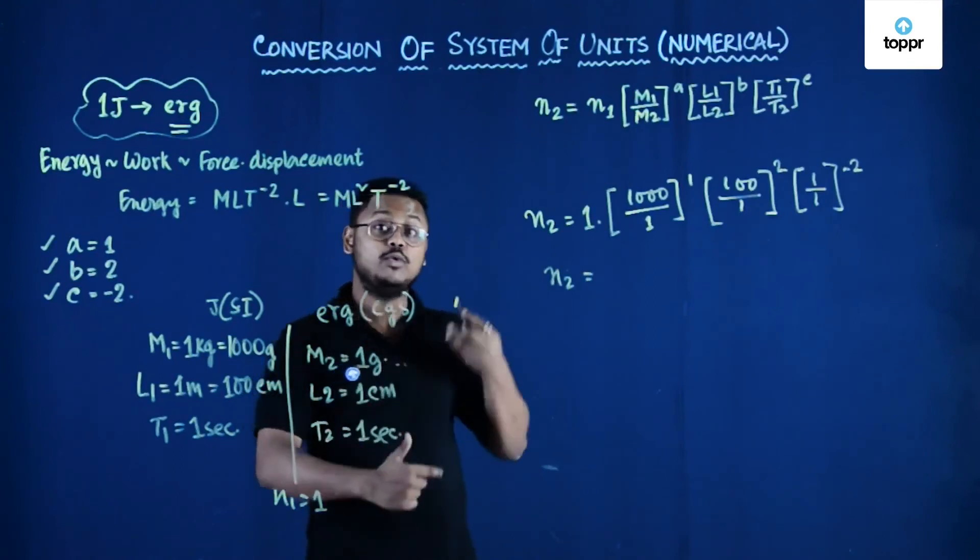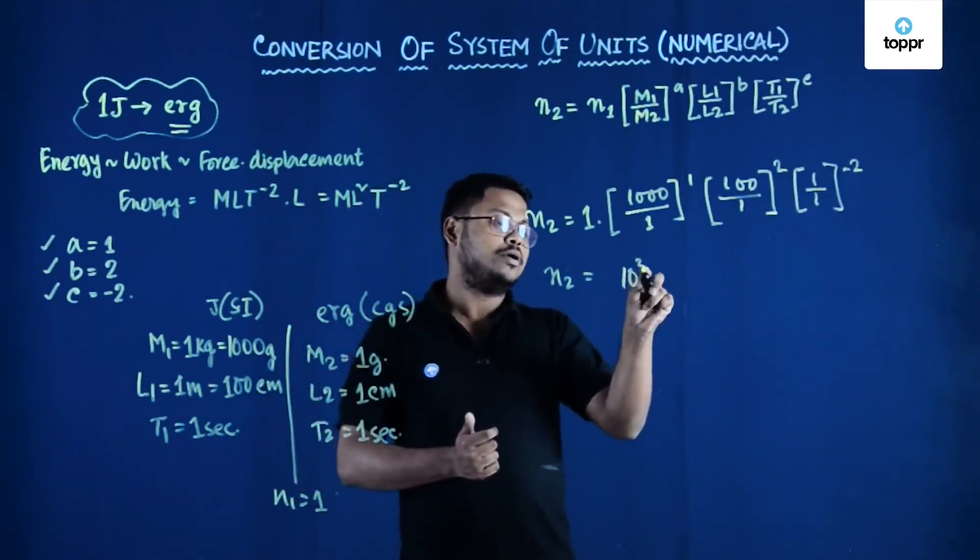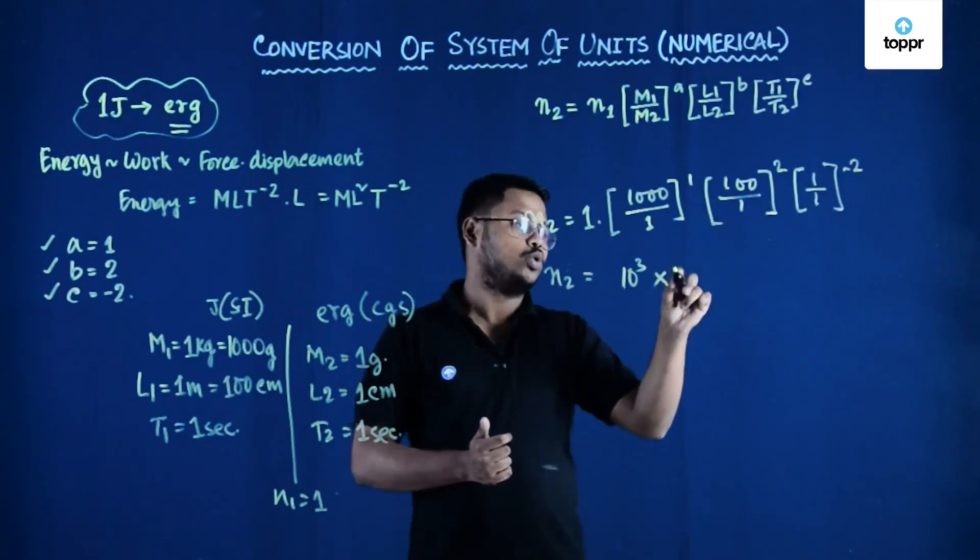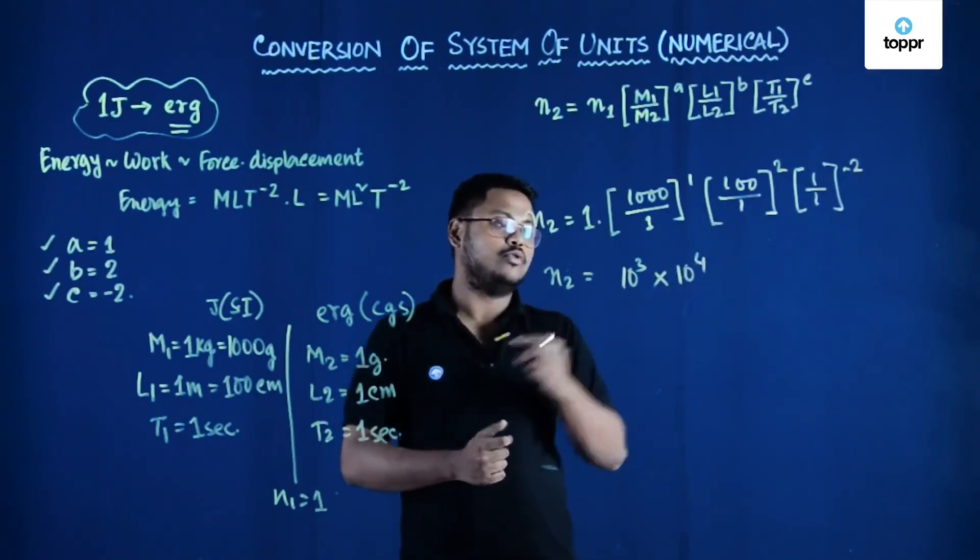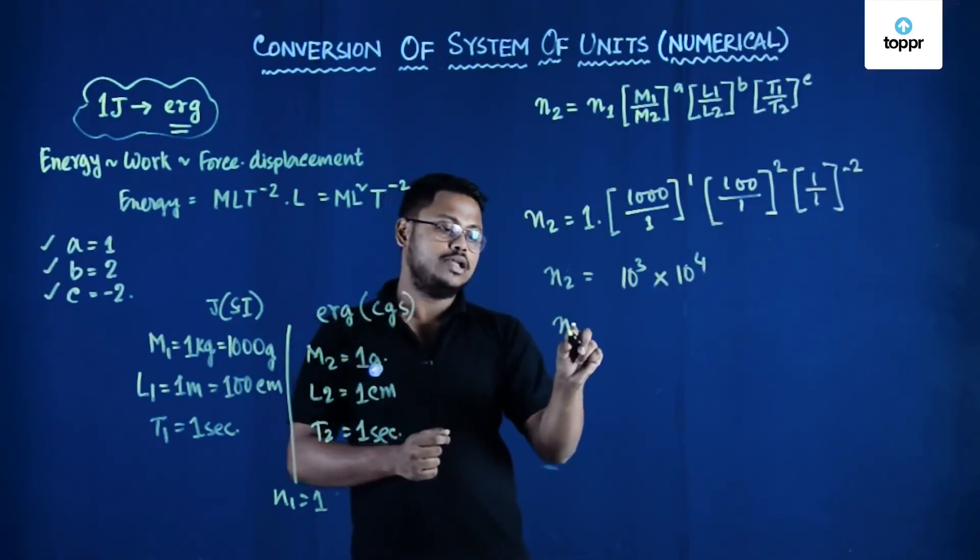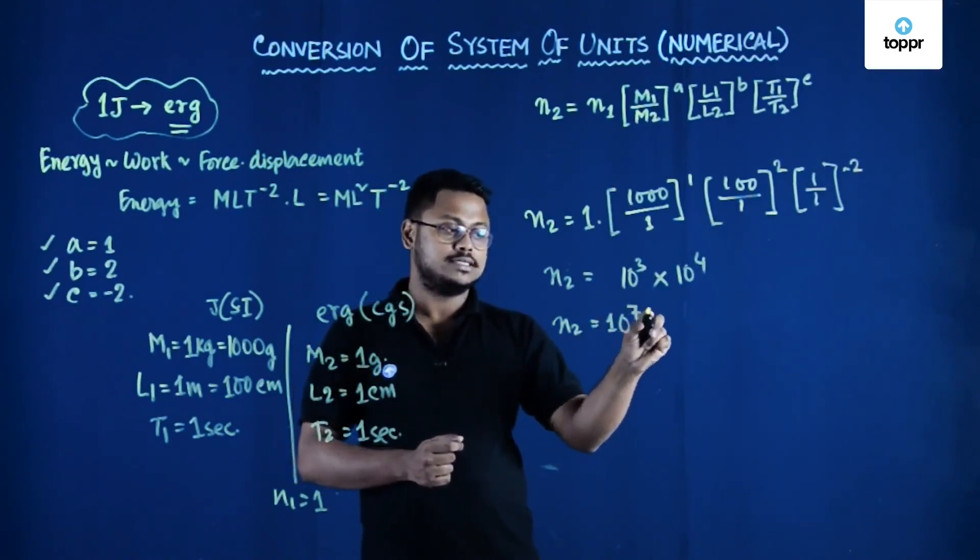the numerical value in new system of unit will be 10 to the power 3 into 10 to the power 4. So n2 will be 10 to the power 7.